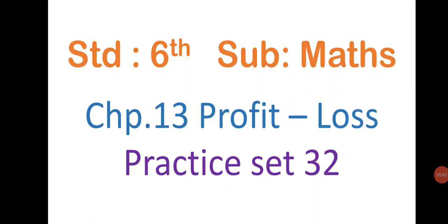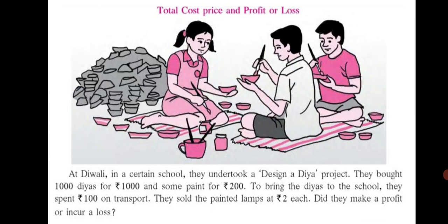Standard 6th Subject Maths, Chapter 13, Profit Loss, Practice Set 32. In this particular practice set, you are going to learn about total cost price and profit or loss. Let's have a look at an example. At Diwali, in a certain school, they undertook a 'design a diya' project. They bought 1,000 diyas for Rs. 1000 and some paint for Rs. 200. To bring the diyas to the school, they spent Rs. 100 on transport. They sold the painted lamps at Rs. 2 each. Did they make a profit or incur a loss?